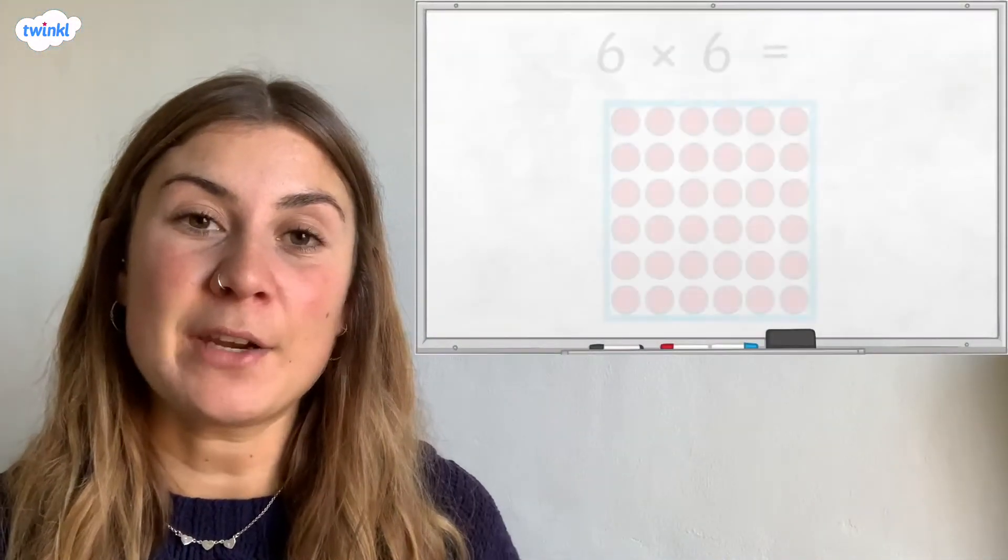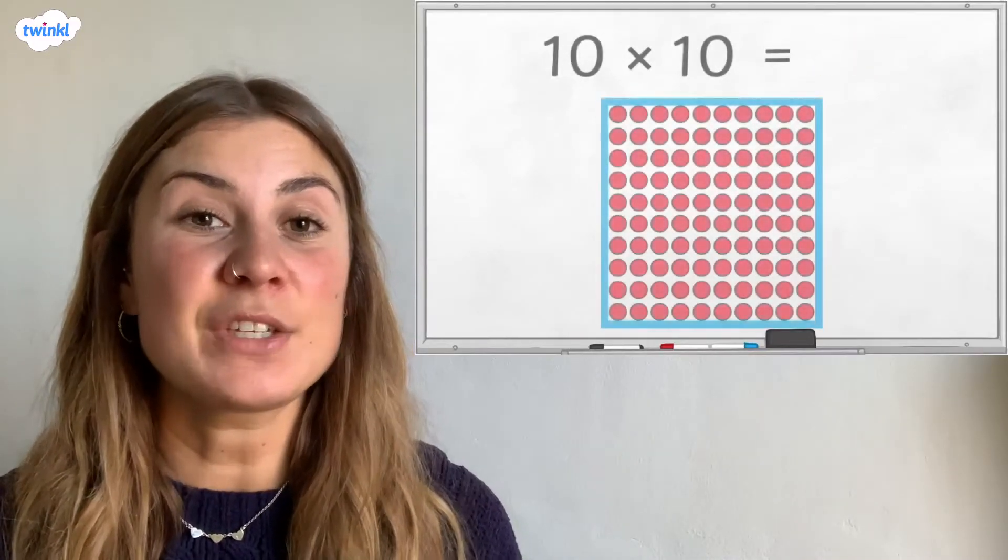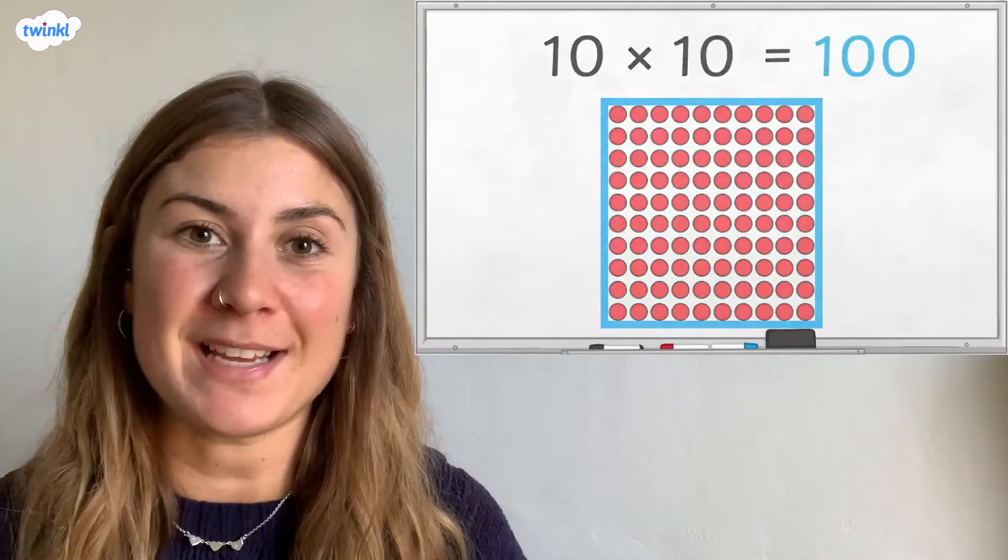Some other examples of square numbers are 36, which is 6 multiplied by itself, and 100, which is 10 multiplied by itself.